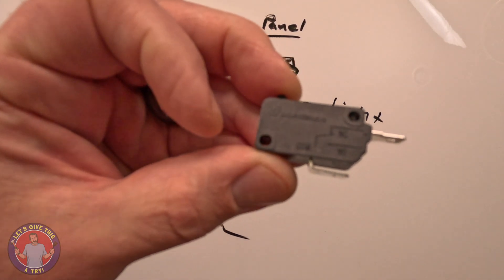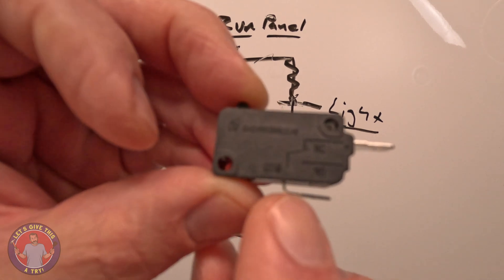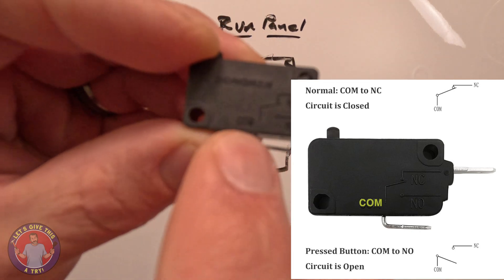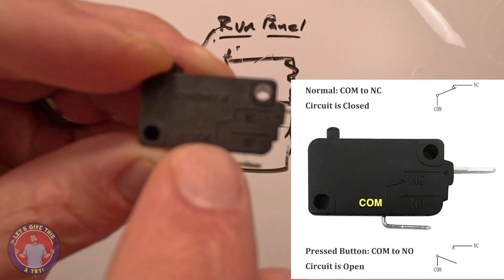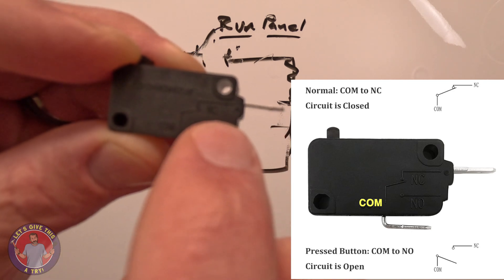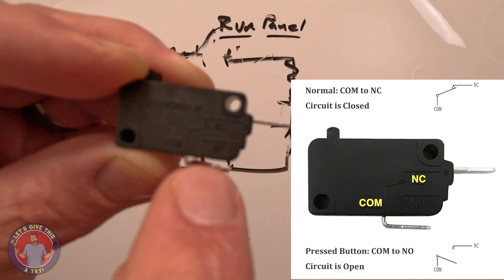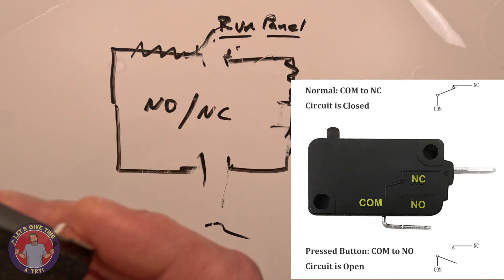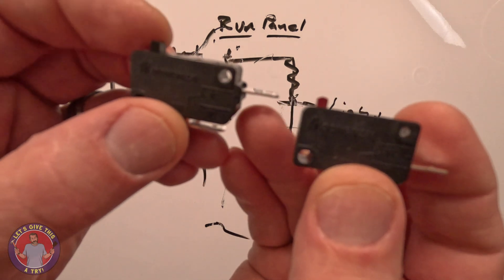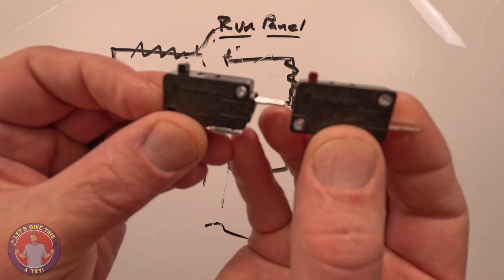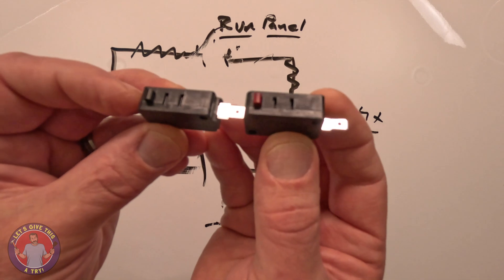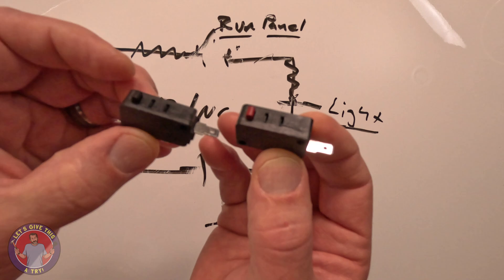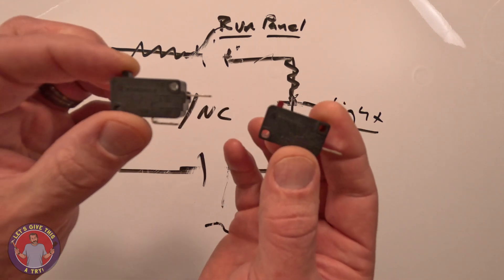You probably can't read, but it says COM right here, which is your common wire, and then there's a little line that goes up and it says NC, which means normally closed, or a little line down here that says NO, which means normally open. These switches are essentially identical apart from one thing. This one's got a black button, this one has a red button. That's how you know which one is which.